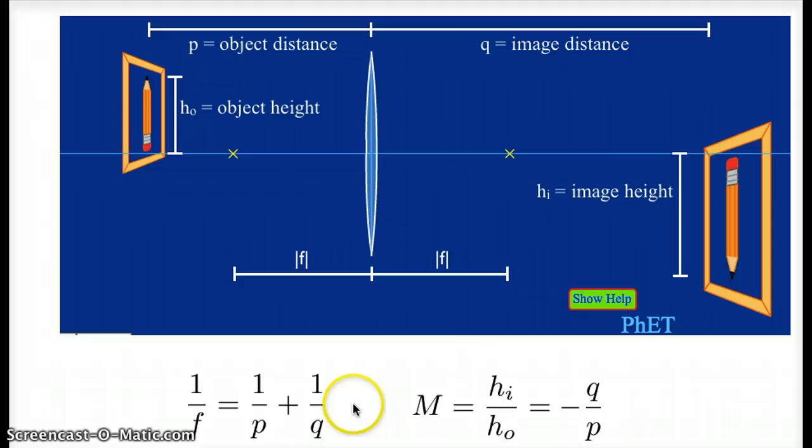And both of these equations, the lens equation and the fact that magnification is equal to negative q divided by p, those both come from the ray diagram. If we draw the ray diagram and do a little bit of geometry, we can come up with these equations. So the numbers that we get from these equations are consistent with the numbers we would get from a very accurately drawn ray diagram.